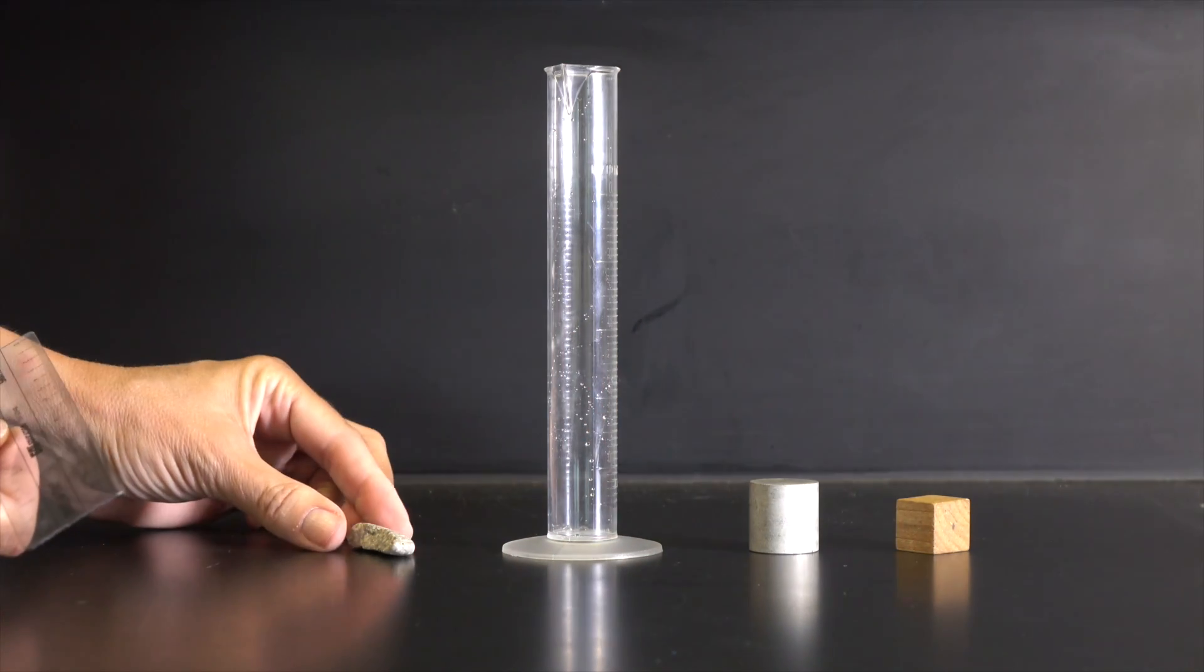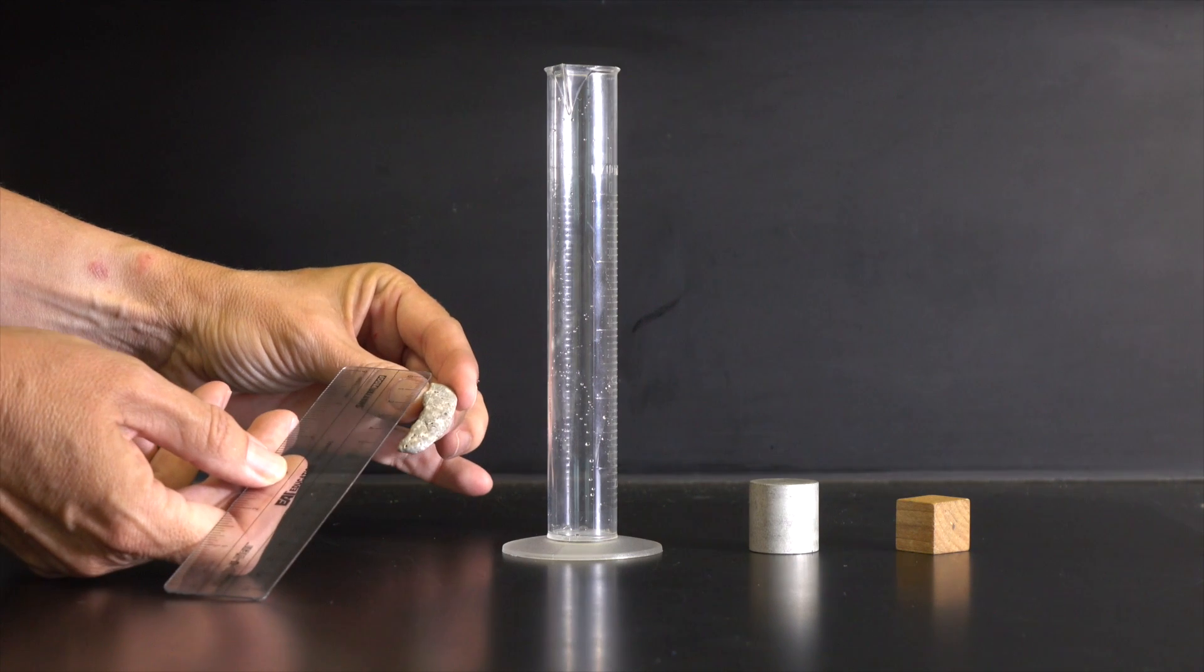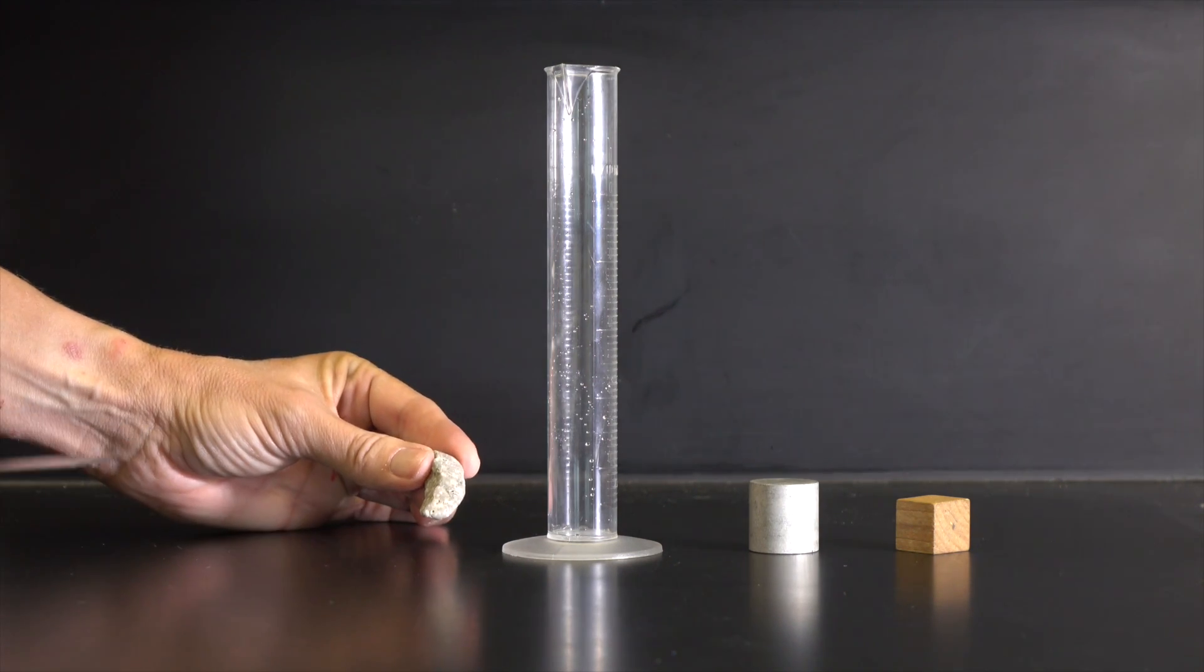But when it comes to measuring the volume of an irregular solid, a different method has to be used, called water displacement.